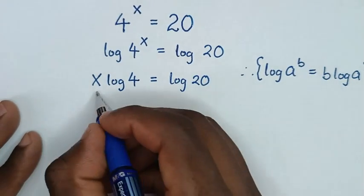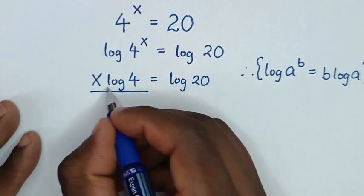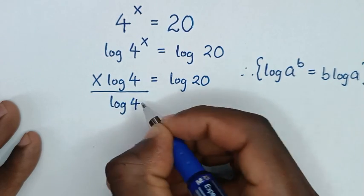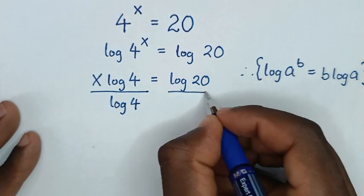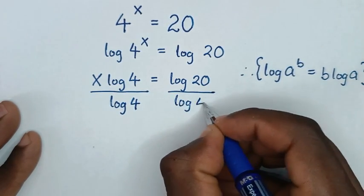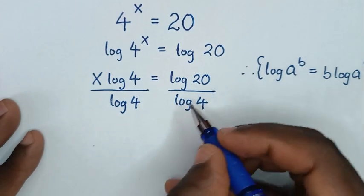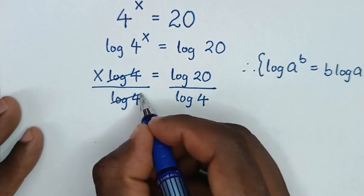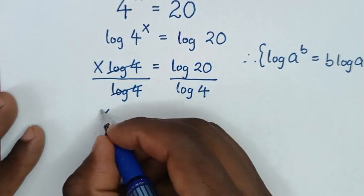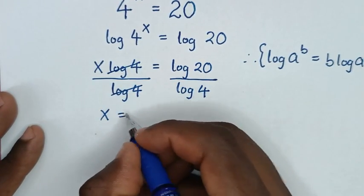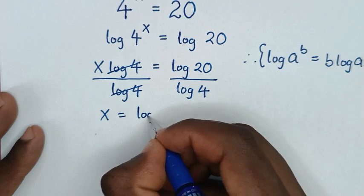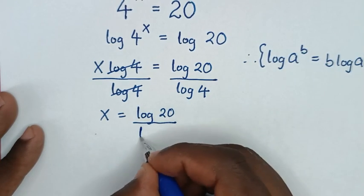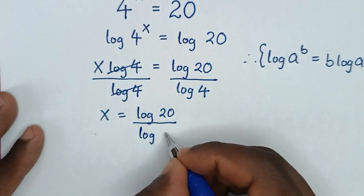Then from here, we'll divide by log of 4 on both sides. So we divide by log of 4 here and here. This log of 4 will cancel with this log of 4, giving us x is equal to log of 20 over log of 4.